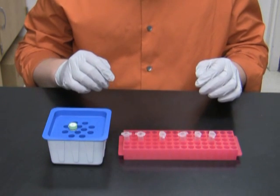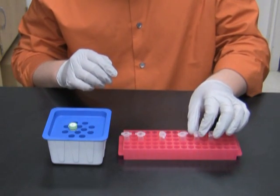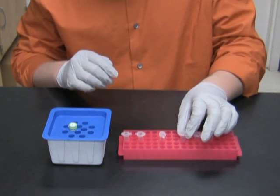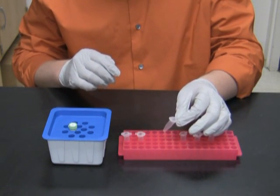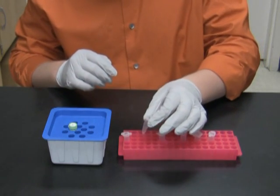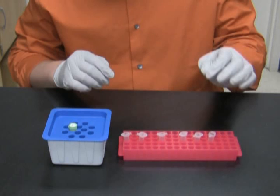Let's set up the ligation reaction. Here on the bench I have double distilled water, a tube with cut vector, a tube with cut insert, an aliquot of ligase buffer—remember that ligase buffer has to be aliquoted to avoid freeze thawing—an empty tube for vector plus insert, an empty tube for control, and the T4 DNA ligase.